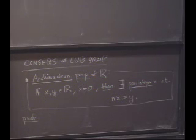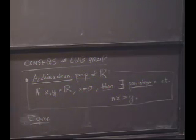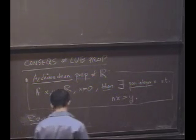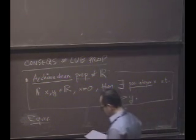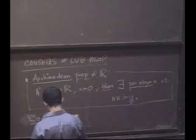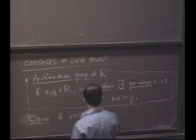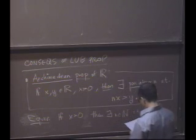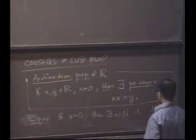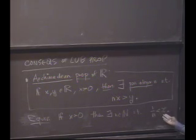Actually, maybe I might even just point out some other things before I prove this property. So it's equivalent to thinking about the following statement. I claim, if you like, if I just let y be 1, then really what this is saying is if x is bigger than zero, then there exists a natural number such that 1 over n is less than x. Okay, so some reciprocal of a positive number is going to be eventually smaller than x.